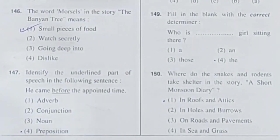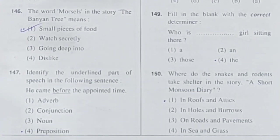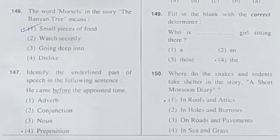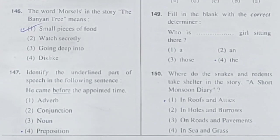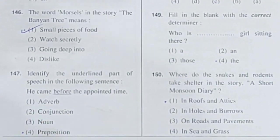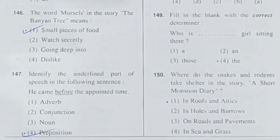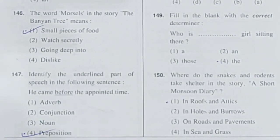Question 147: Identify the underlined part of speech in the following sentence — 'He came before the appointed time.' 'Before' is underlined. There are eight parts of speech. Here 'before' is a preposition — not an adverb, conjunction, or noun. 'Before' is a preposition. Option for preposition is correct.